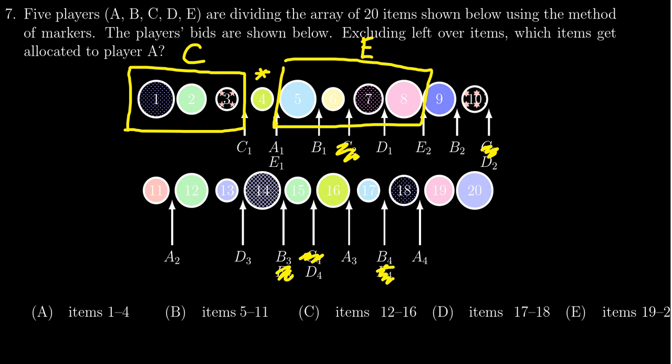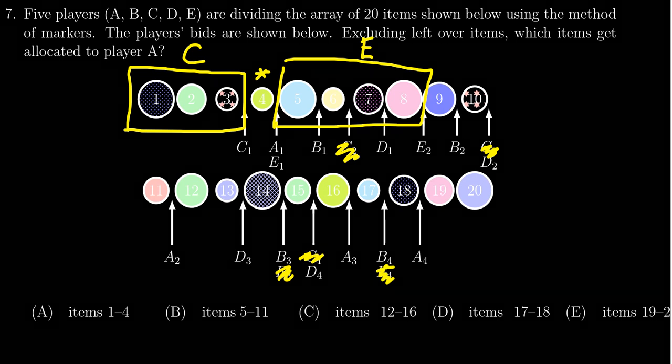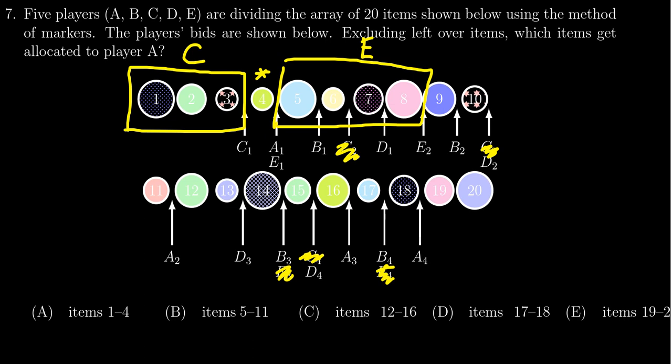Now we're going to look for the leftmost third marker. That appears to be D right here. D is the next one, so D then goes back up to this one right here. D is going to get these items: